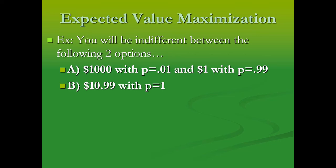We just take our outcome, multiply it by the probability, and add it to the other outcomes multiplied by their probabilities. So we take $1000, multiply it by the probability of 0.01, and that's worth $10.